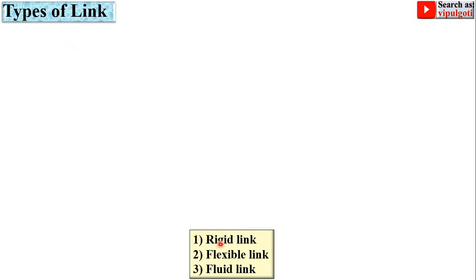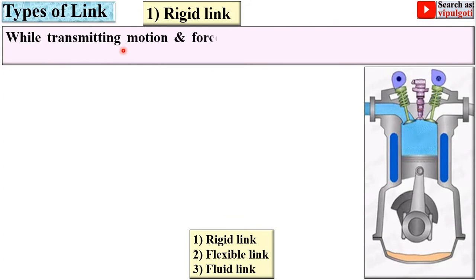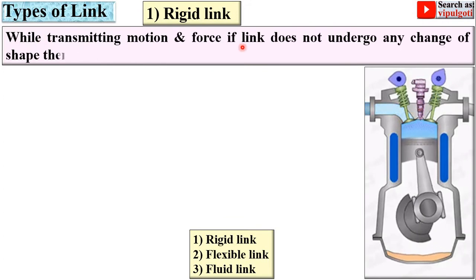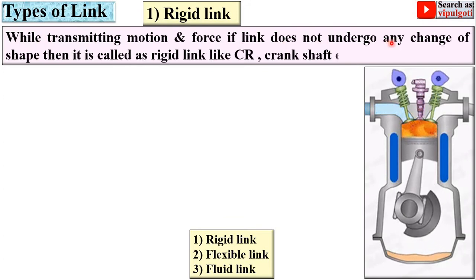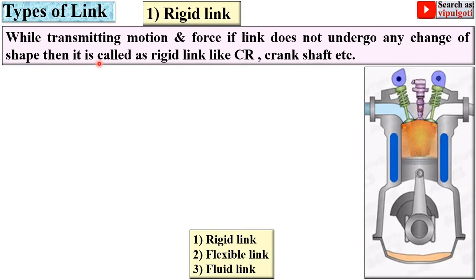Let us start from the first, rigid link. While transmitting motion and force, if the link does not undergo any change of shape, then it is called a rigid link, like connecting rod, crankshaft, etc. Here you can see the connecting rod and the shaft perpendicular to this plane is the crankshaft.